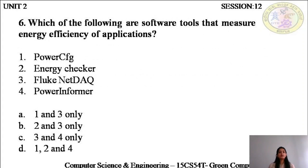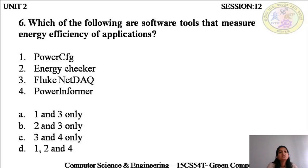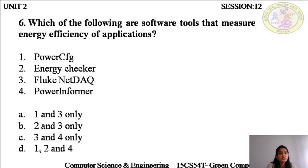Which of the following are software tools that measure energy efficiency of applications? We discussed both hardware tools and software tools. Power Configuration is a software tool. Energy Checker is a software tool. Fluke Networked Data Acquisition is a hardware tool. And Power Informer is again a software tool. So the answer is 1, 2, and 4 — which is D.